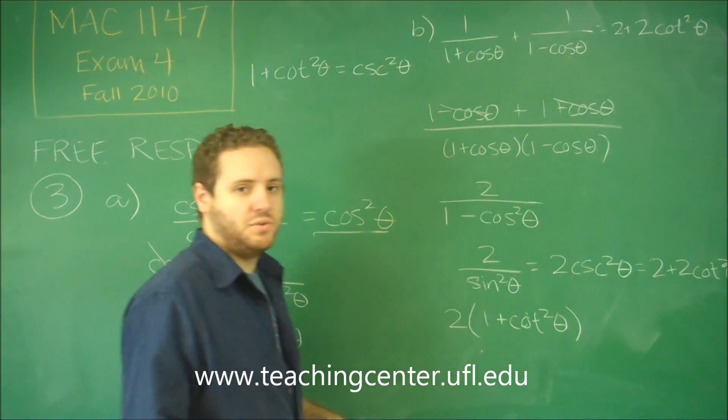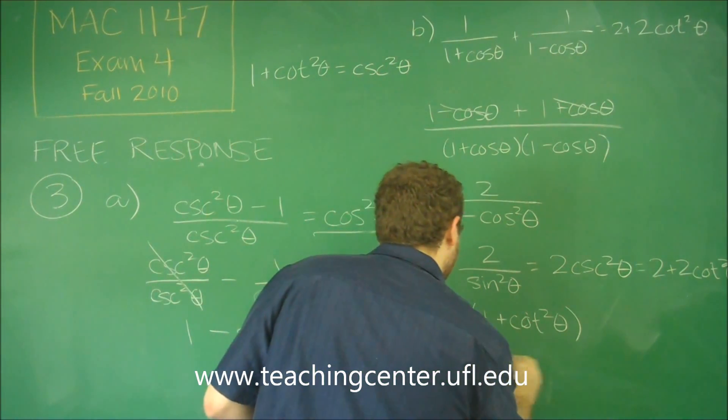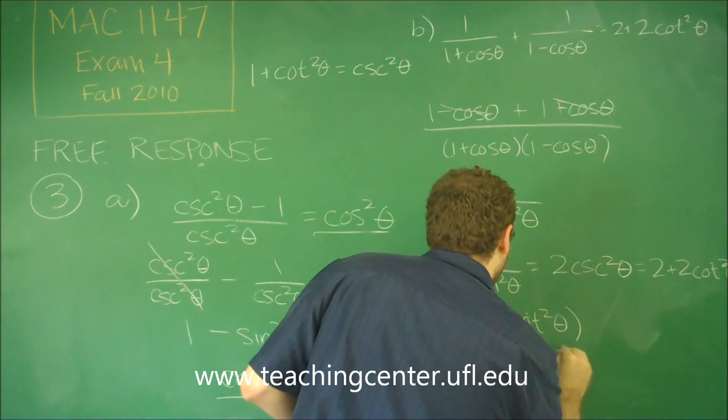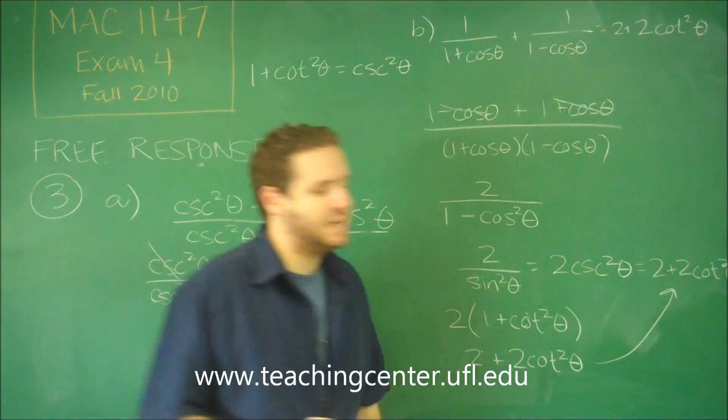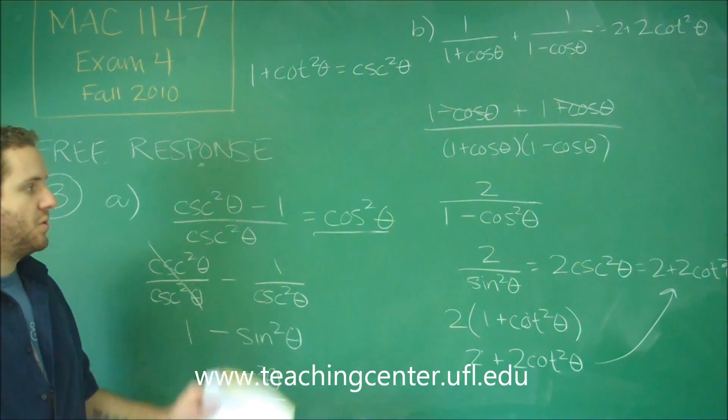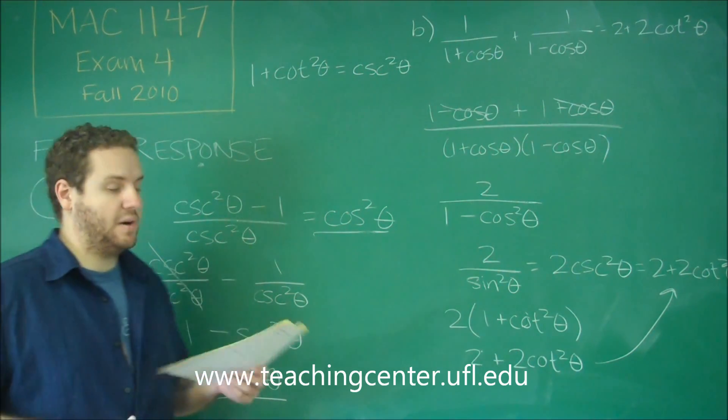And now you can see that if you distribute the two, you get two plus two cotangent squared theta. That's exactly what we were supposed to get. So this identity is also verified then.